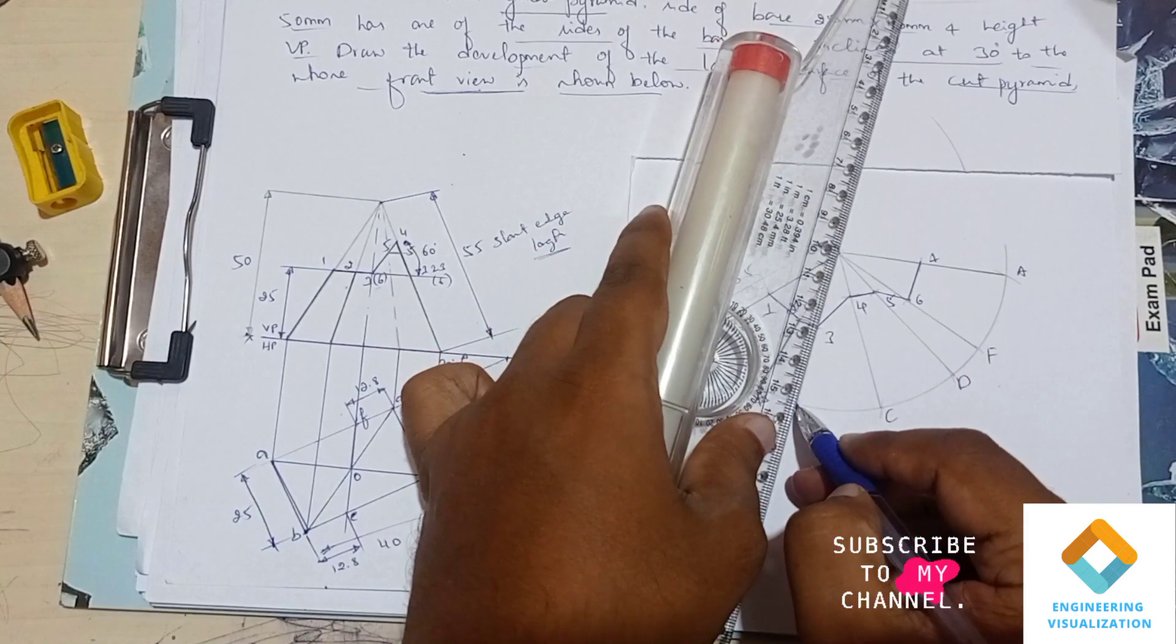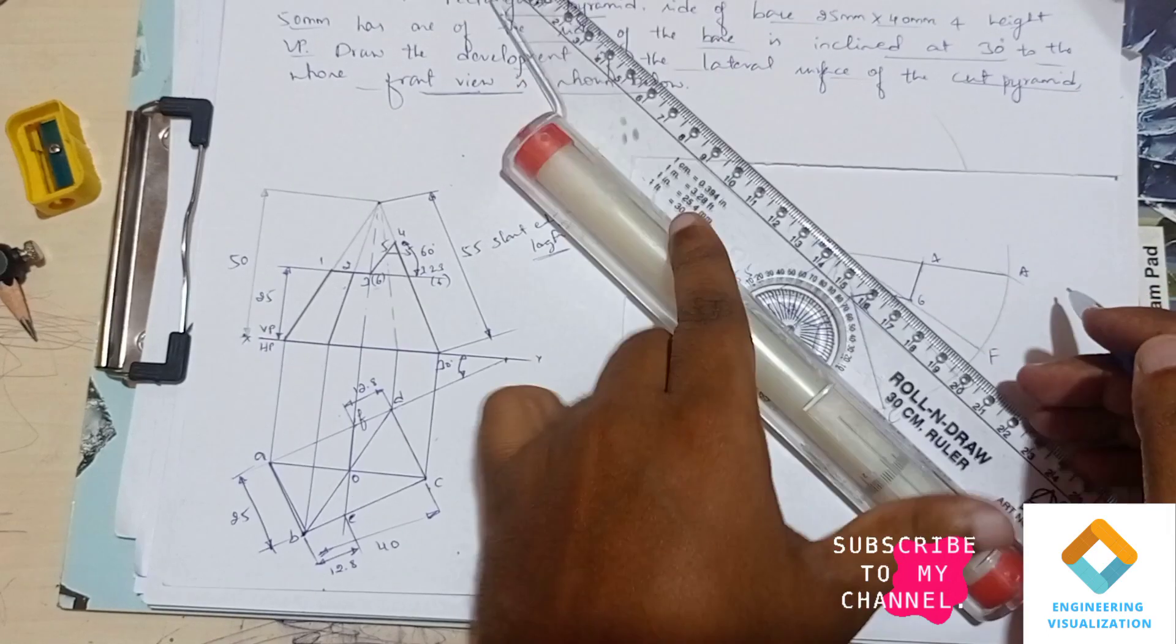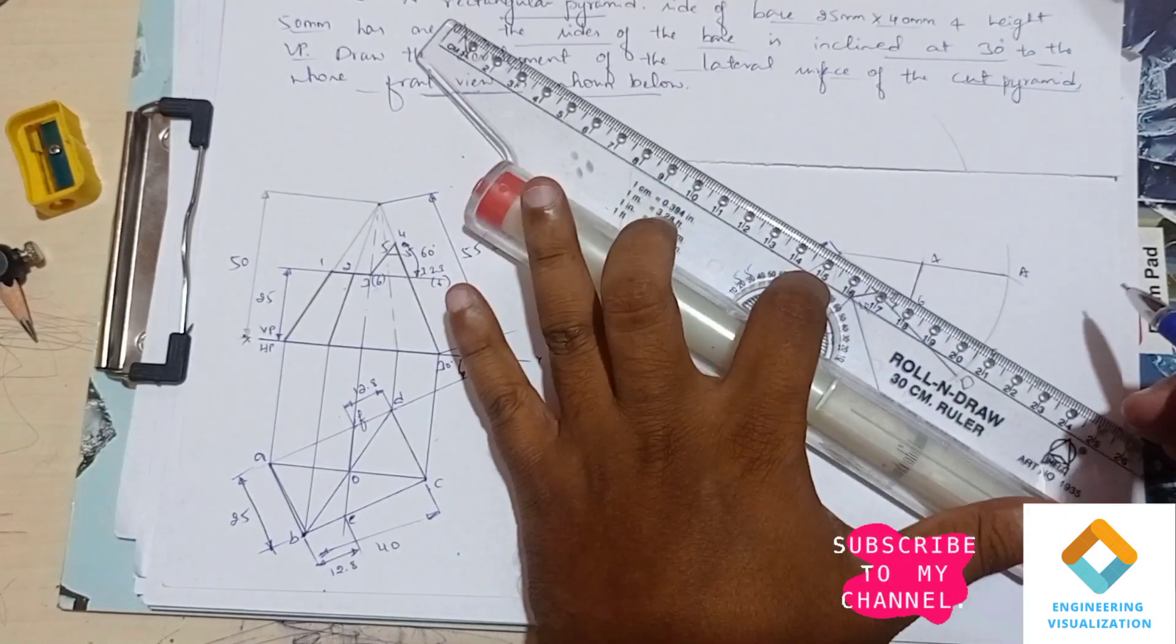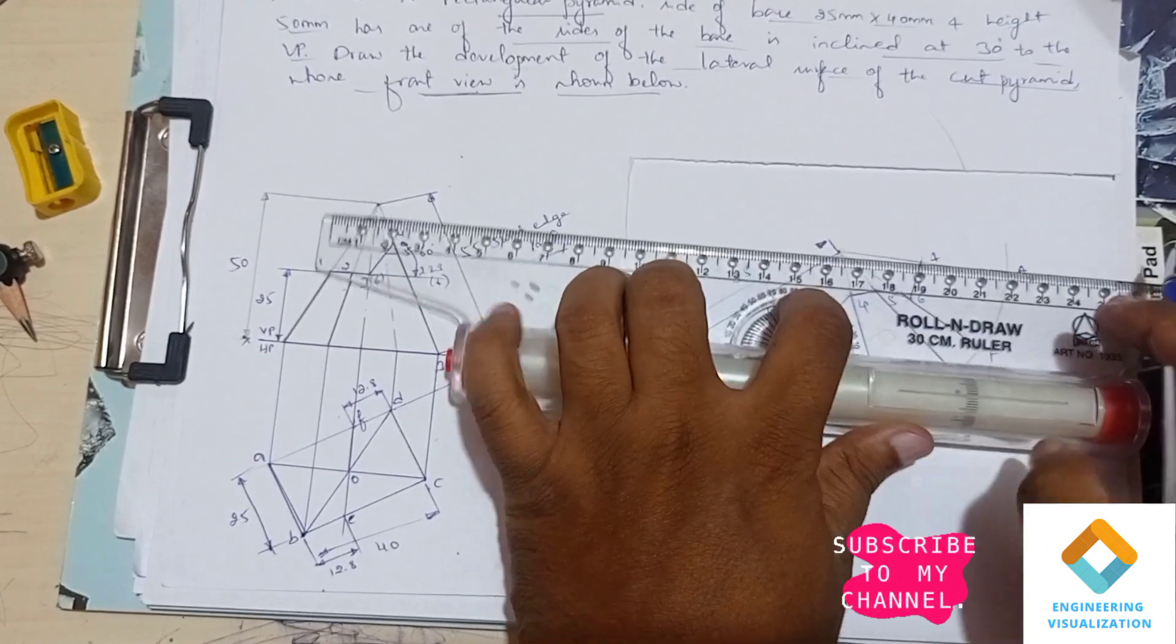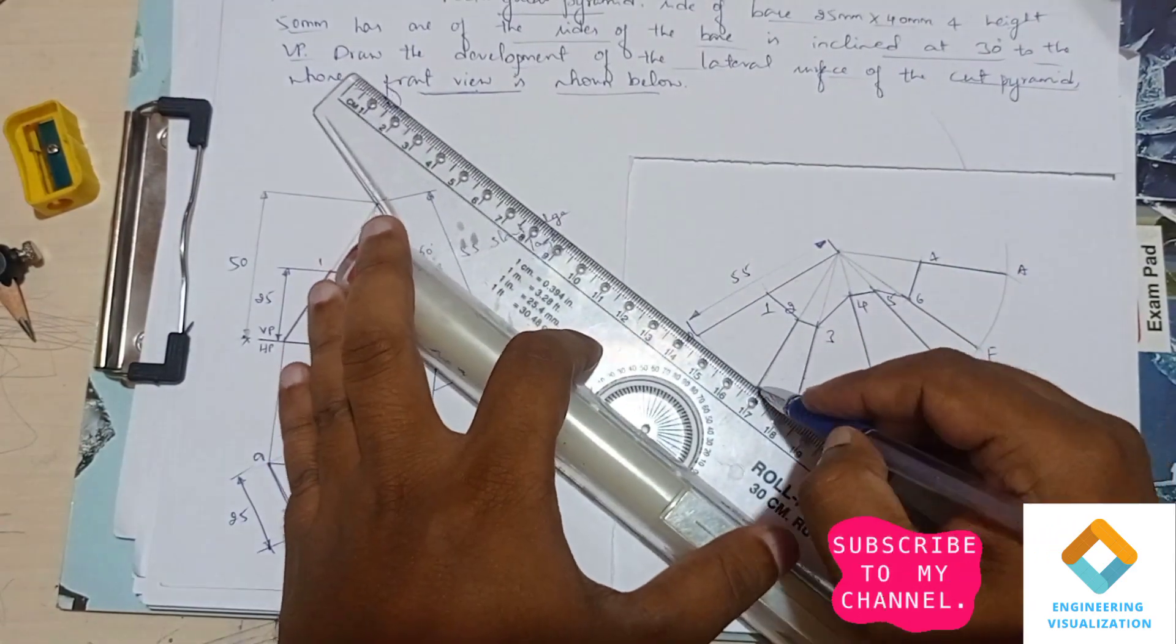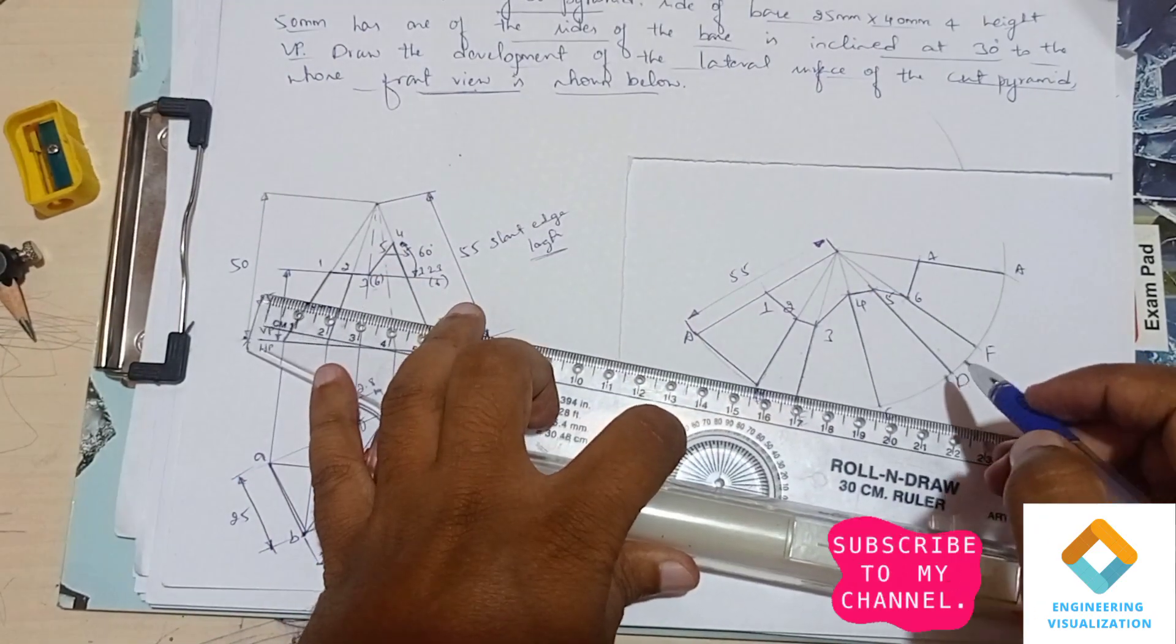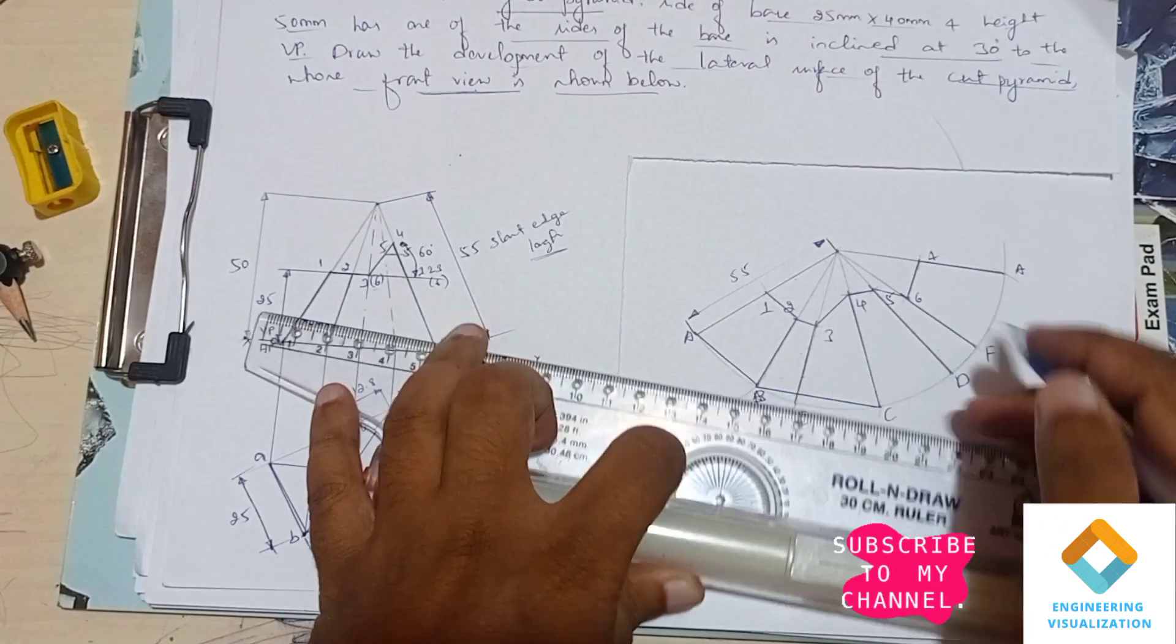Since it is the development of the lower cut portion, we are going to dark the lower part here. Dark all the slanted edges with the thick line. Connect all this lower portion, so join the base edge here.